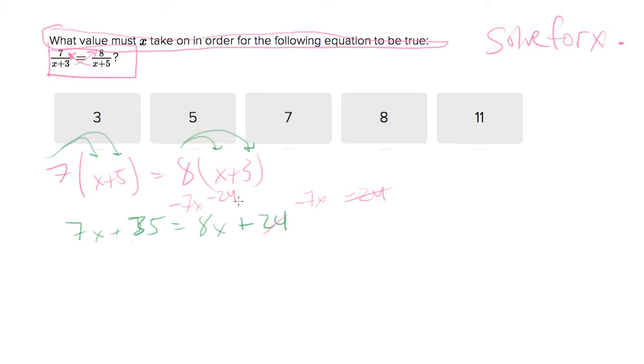Right, so the 24s cancel, the 7x is cancel, and you're left with 35 minus 24, which is 11, equals 8 minus 7x, which is 1x.